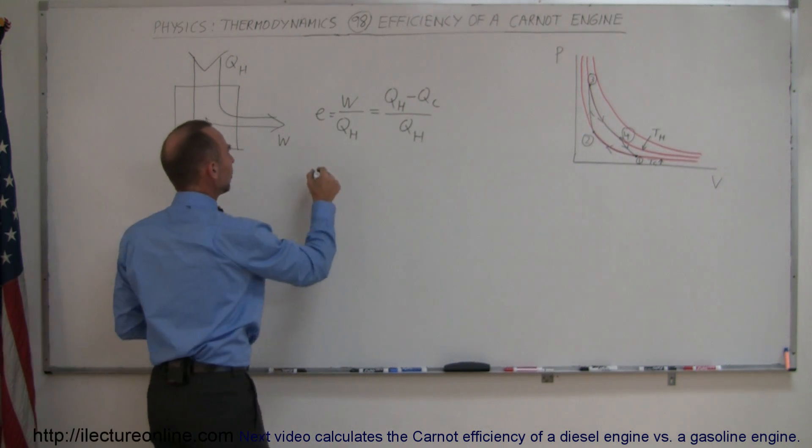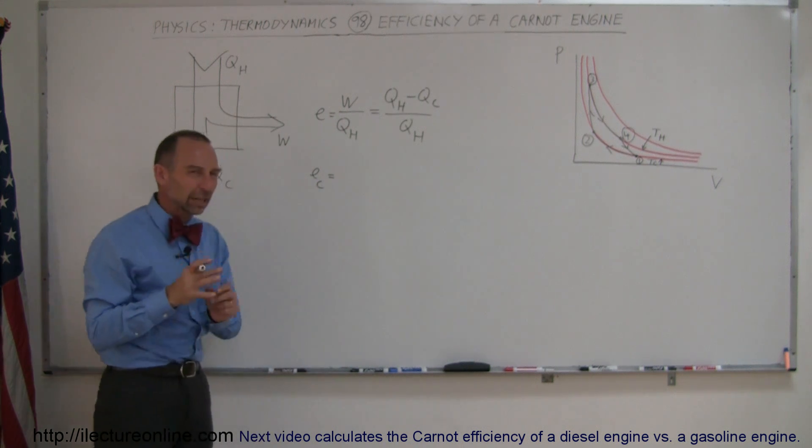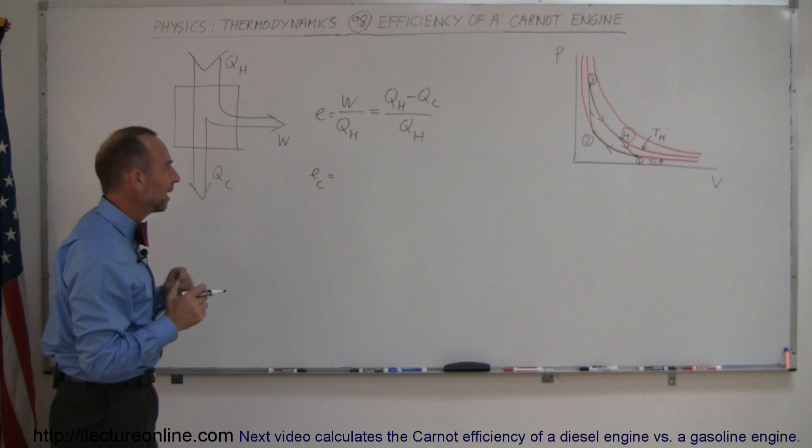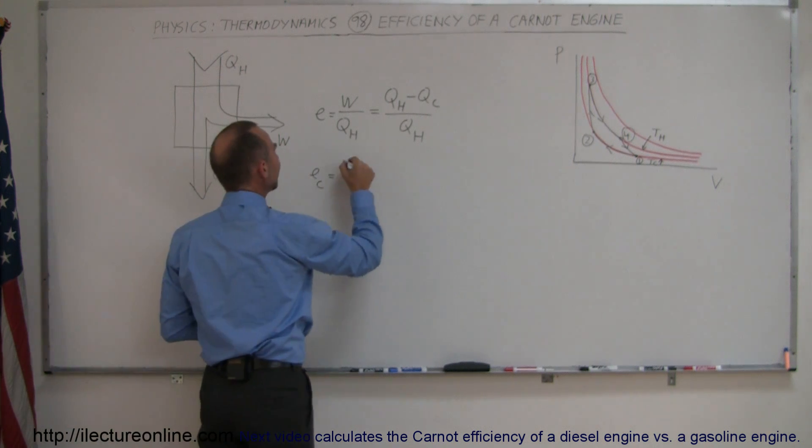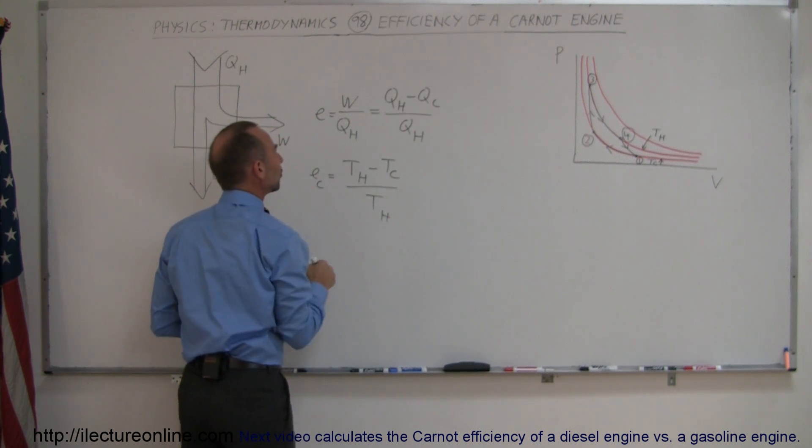The Carnot efficiency, we can write E sub C, which is that theoretical engine, the one that really doesn't exist, is equal to T_hot minus T_cold divided by T_hot. Notice the similarity between these two equations.